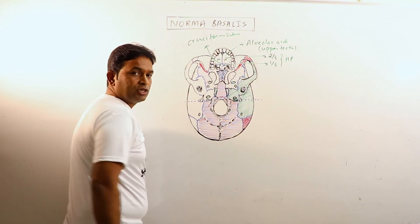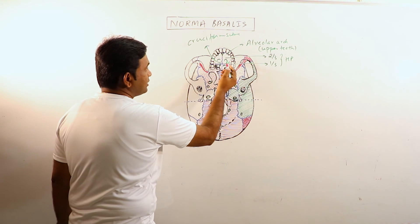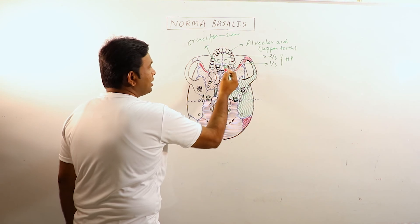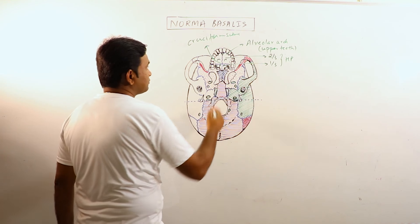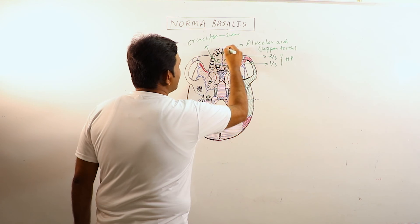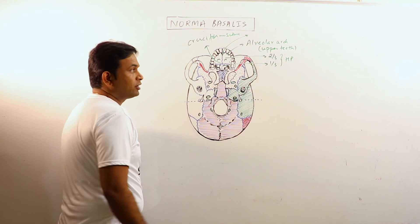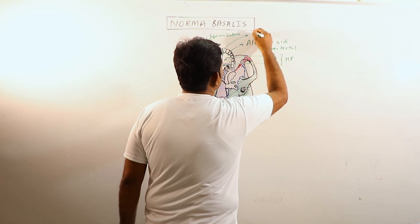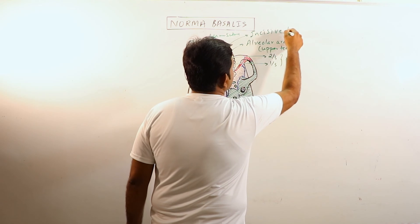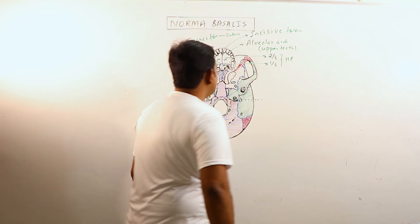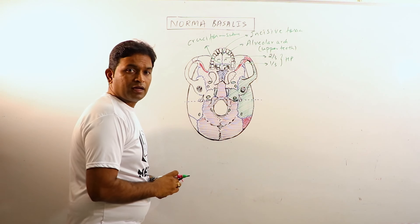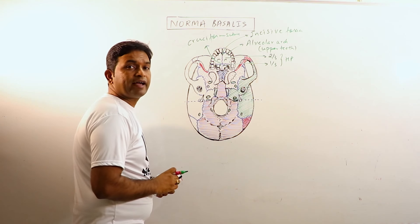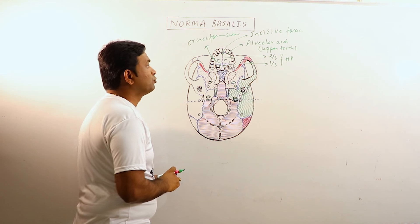It is basically the junction of intermaxillary, interpalatine and palatomaxillary sutures. Antero-inferiorly we can observe a triangular depressed area, a triangular depression which is known as incisive fossa. Incisive fossa receives the incisive canals. There are two incisive canals which open in it.